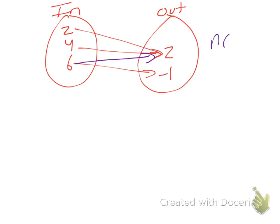This is not a function because now if I choose 6 to go in, sometimes it'll be a 2 and sometimes it'll be a negative 1. It's okay for multiple inputs to go to the same output — the 2, the 4, and the 6 are all allowed to go to 2. But a single input cannot branch out, as we have for 6 here — it can't make branches to more than one output. If it does that, it's not a function.